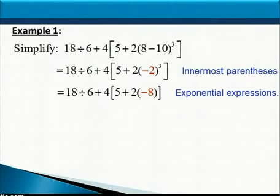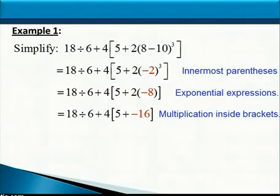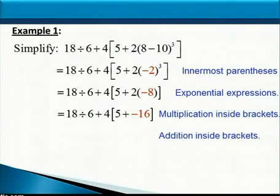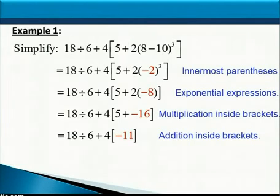Now we have addition and multiplication left to do inside the brackets. Multiplication is done before addition, so the next step is to multiply 2 times negative 8, which is negative 16. That leaves only the addition left inside the brackets: 5 plus negative 16 is negative 11. Now everything inside the brackets is complete.